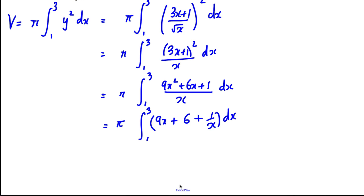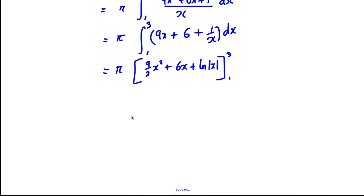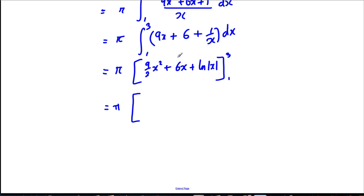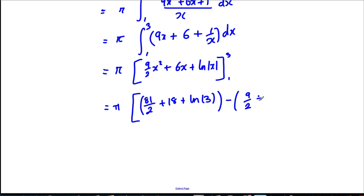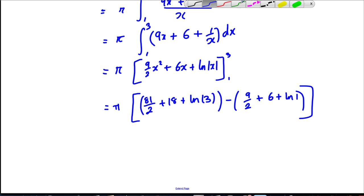At last we can integrate. Raise the power and divide: it's going to be 9/2 x² + 6x + ln|x|, all evaluated between 1 and 3. Keeping the π, substitute in x=3: that gives 81/2 + 18 + ln 3. Then subtract the result when x=1: which is 9/2 + 6 + ln 1. Since ln 1 = 0, that term disappears.